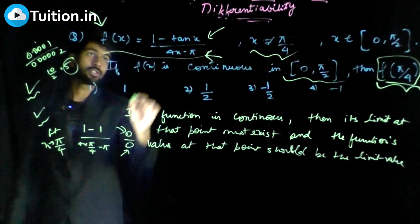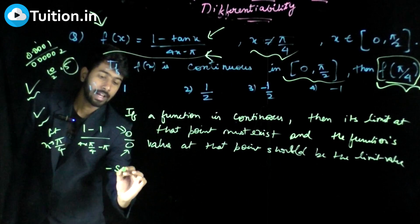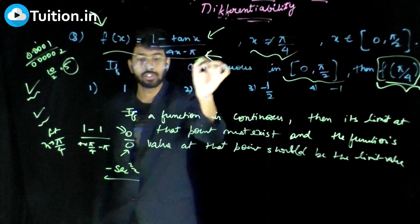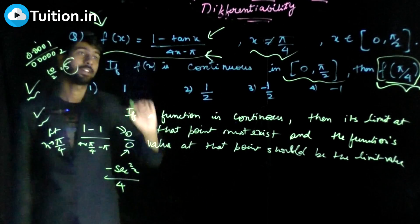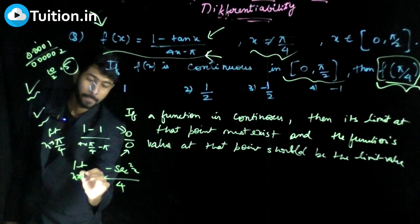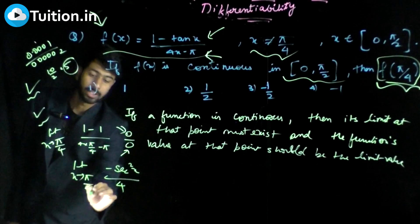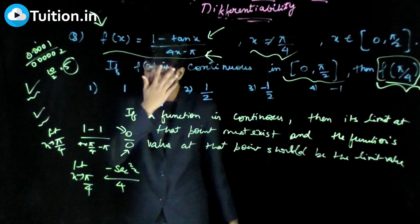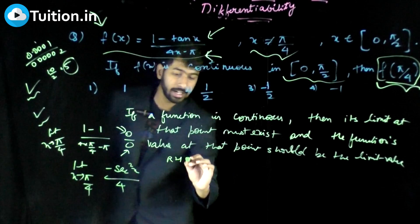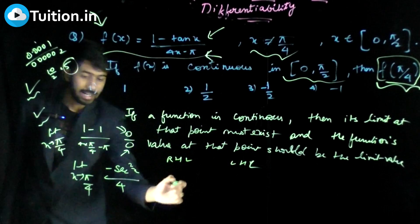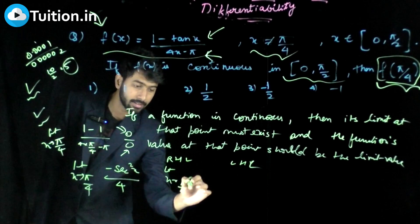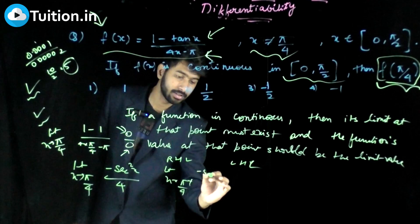Applying L'Hôpital's rule: the derivative of tan x is sec²x, so I differentiate the numerator separately, and the derivative of the denominator gives 4. Now I take the limit as x tends to π/4 of this new expression. Whether I calculate the right-hand limit — that is, x tends to π/4 plus — it's the same function.